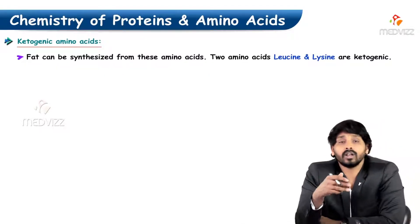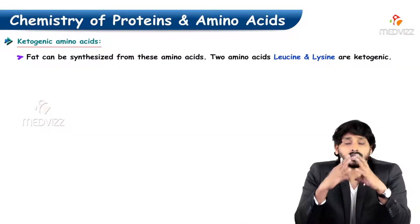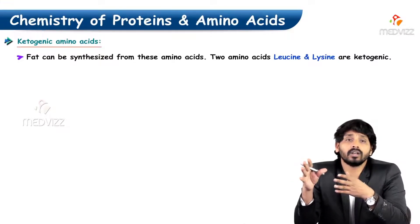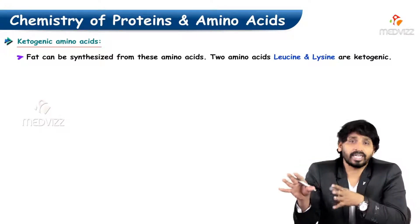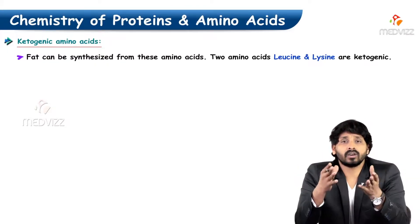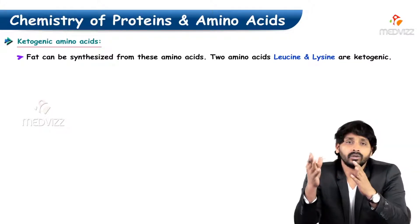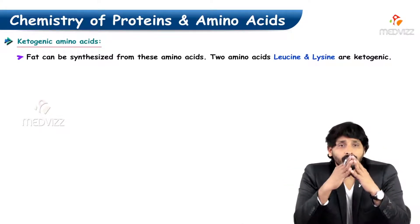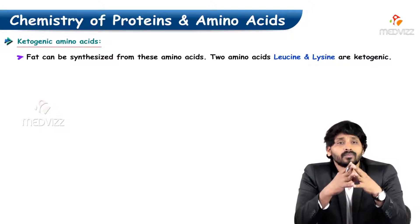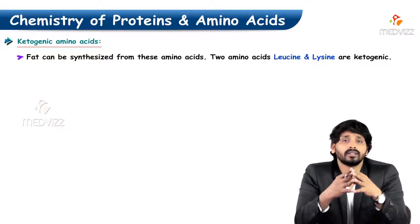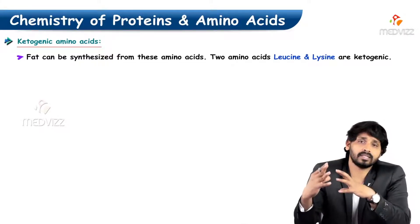Ketogenic amino acids are those whose carbon skeleton is involved in the formation of fat. This is because ketone body synthesis requires acetyl-CoA, which converts into a ketone body. So if a carbon skeleton serves as a precursor for fat synthesis, those amino acids are known as ketogenic amino acids.